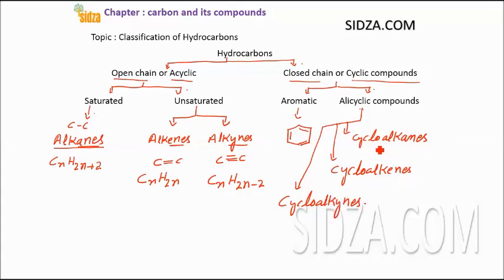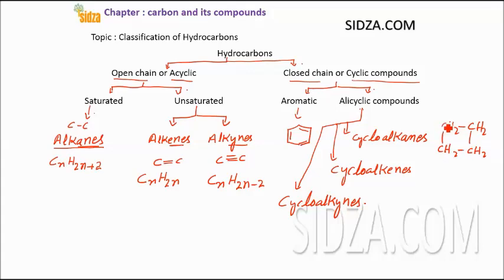Cycloalkanes are cyclic molecules with only carbon-carbon single bonds. For example, if you have a molecule like CH2 single bond CH2 single bond CH2 single bond CH2 single bond CH2 — this is a cyclic molecule, not an open chain molecule. It contains only single bonds, so it is a cycloalkane, and in most of its properties it resembles the alkanes.